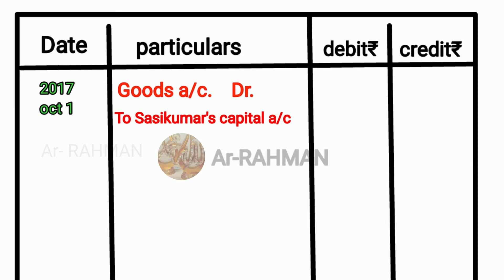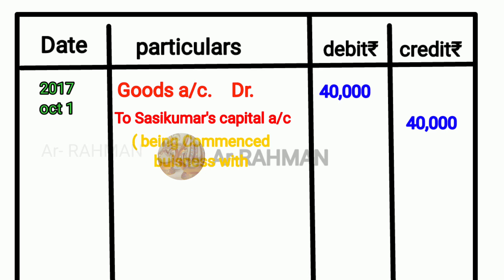So to Sassikumar's capital account. The amount of debit is Rs.40,000 and credit is Rs.40,000. This is the narration: being commenced business with goods.